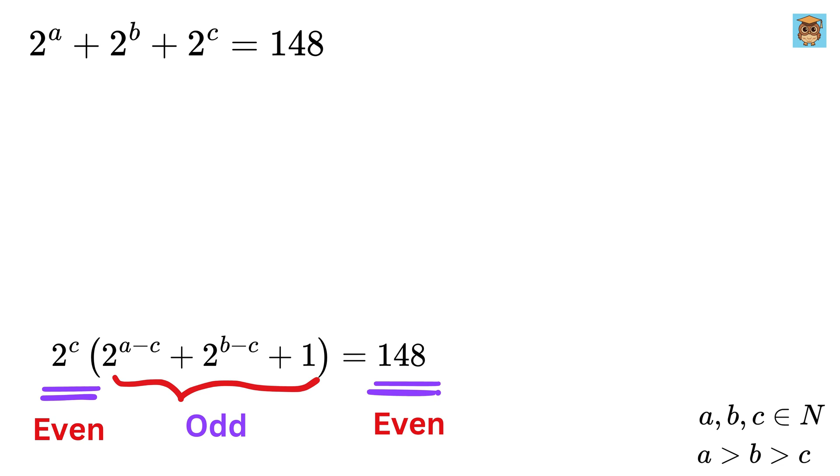Let us factor it out. 148 over 2 is 74, but both of them are still even. Let us divide it by 2 one more time. We get 74 over 2 equals 37, which is what we want, so we can rewrite 148 as 4 times 37.